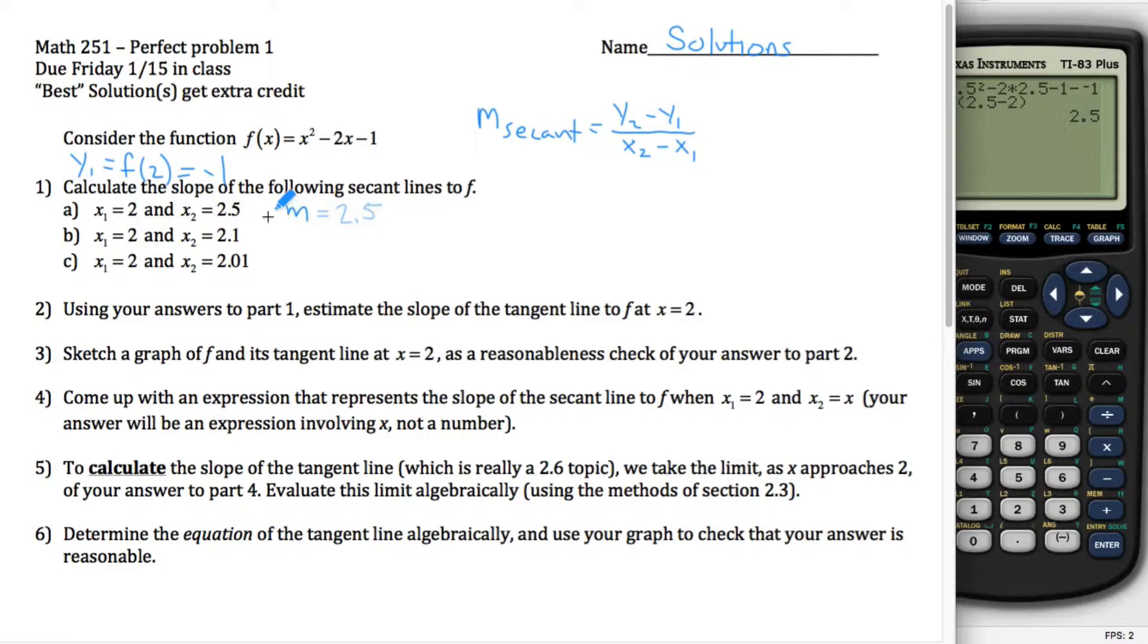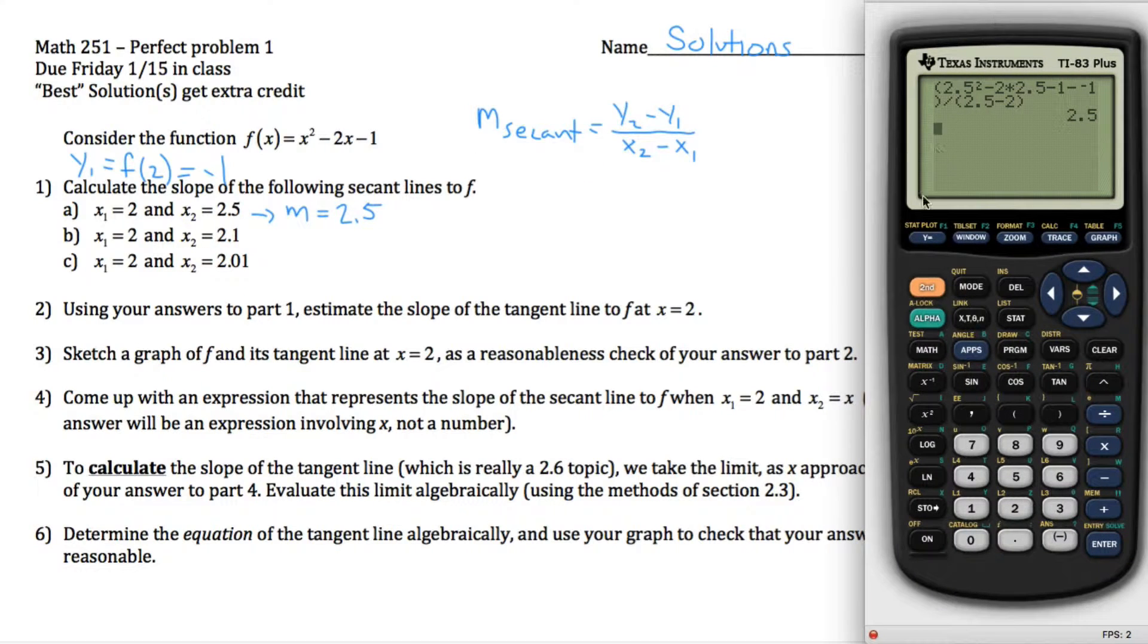So I hit enter, it thinks for a second, and it spits out that the slope of the secant line is equal to 2.5. And then for the second part here, we repeat what we just did. The only thing that changes is now x2 is 2.1. So I'm going to pull up that last entry, hit second and then enter, and then just go through and edit it.